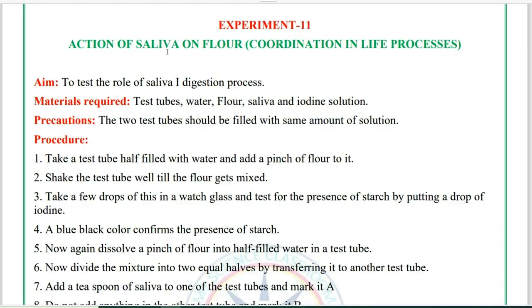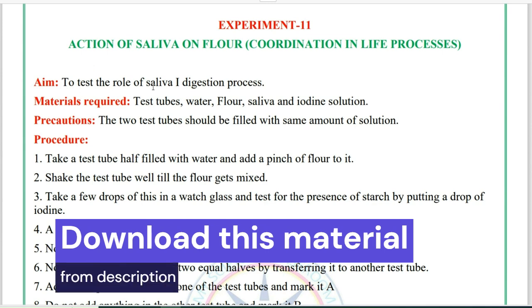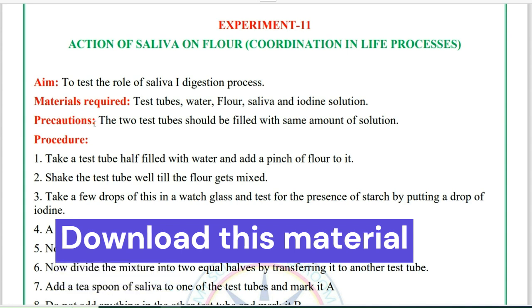The next experiment is the action of saliva on flour, from the coordination in life processes chapter. Aim: to test the role of saliva in the digestion process. Materials required: test tubes, water, flour, saliva, and iodine solution.